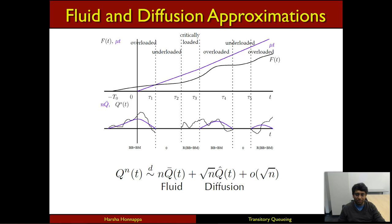To give you an example, suppose that F varied around in this fashion, where you went from overload, that is where you have excessive arrivals, to underload, where you have excessive service capacity in the system, to critical load, where the service capacity and the arrival rates are perfectly matched.